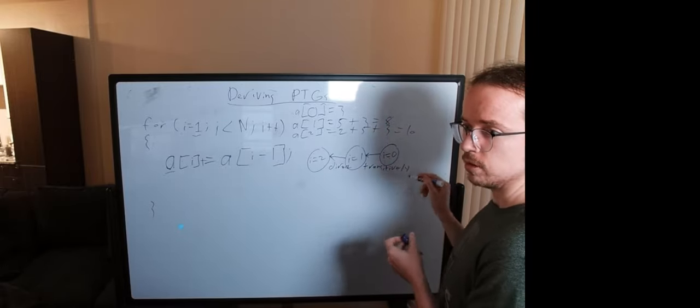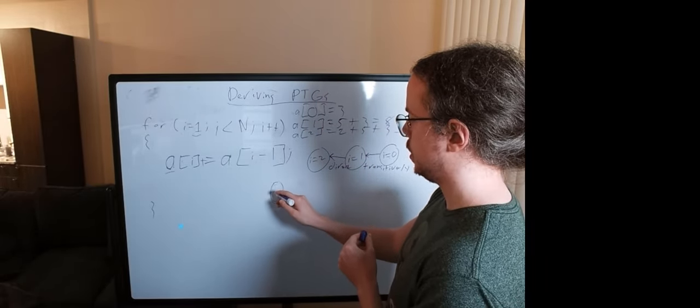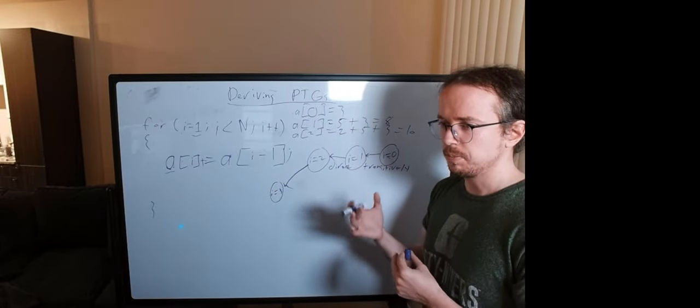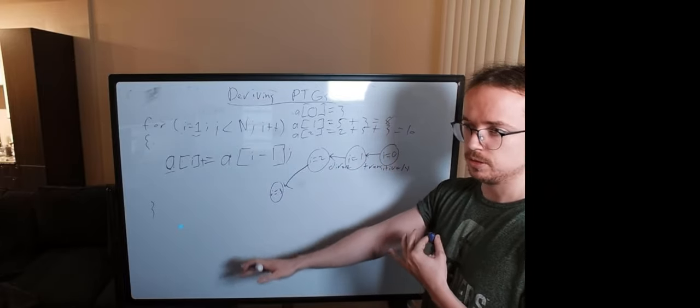And we've used these words in class already. And you could continue this, right? i equals three. And so your dependencies are just going to be attached to every element through n.